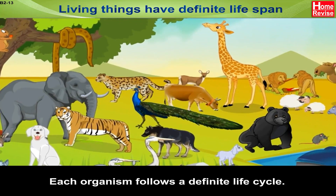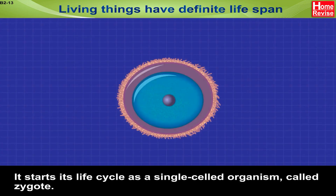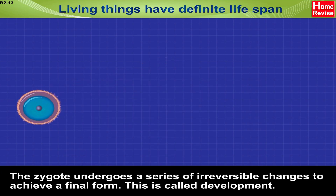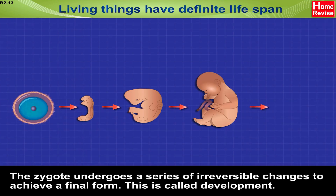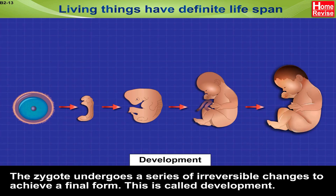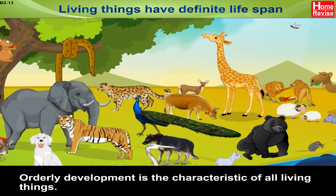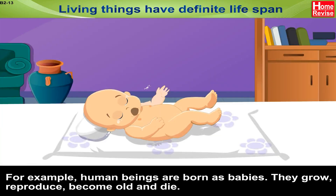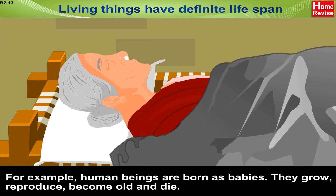Each organism follows a definite life cycle. It starts its life cycle as a single-celled organism called a zygote. The zygote undergoes a series of irreversible changes to achieve a final form; this is called development. For example, human beings are born as babies — they grow, reproduce, become old, and die.